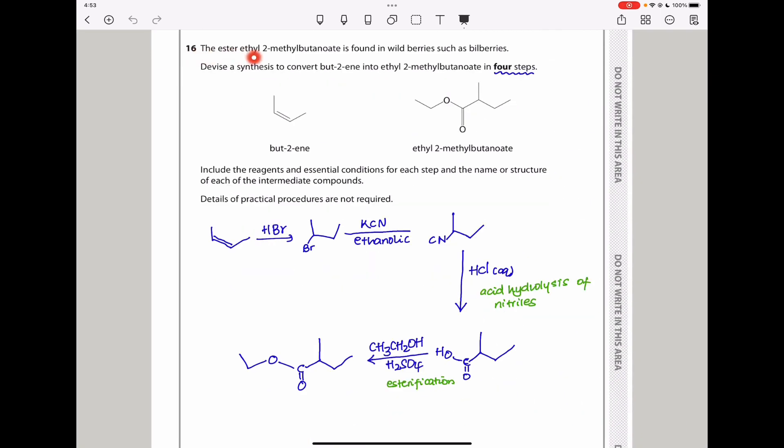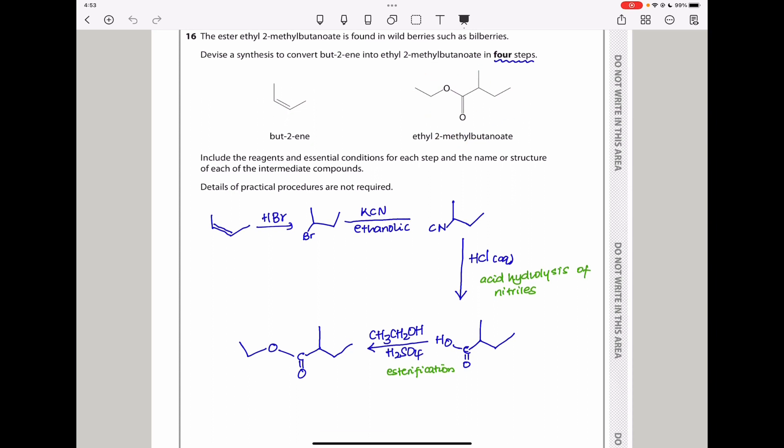Let's begin with the first question, Question 16. The ester ethyl-2-methylbutanoate is formed in wild berries such as bilberries. Devise a synthesis to convert butyne into ethyl-2-methylbutanoate in four steps. They've given us the skeletal formulae of butyne and the ester. Include the reagents and essential conditions for each step and the name or structure of each of the intermediate compounds.